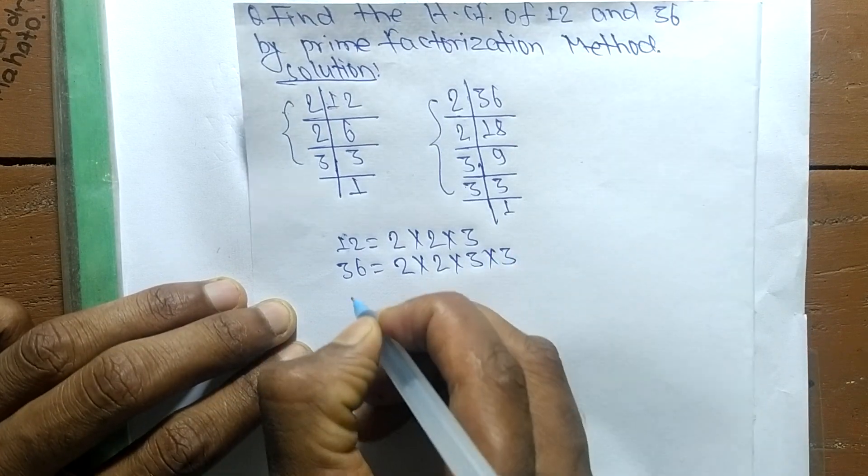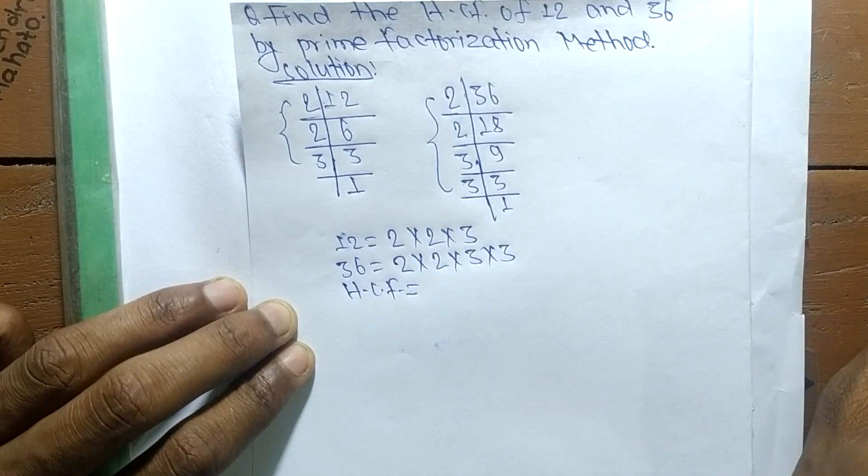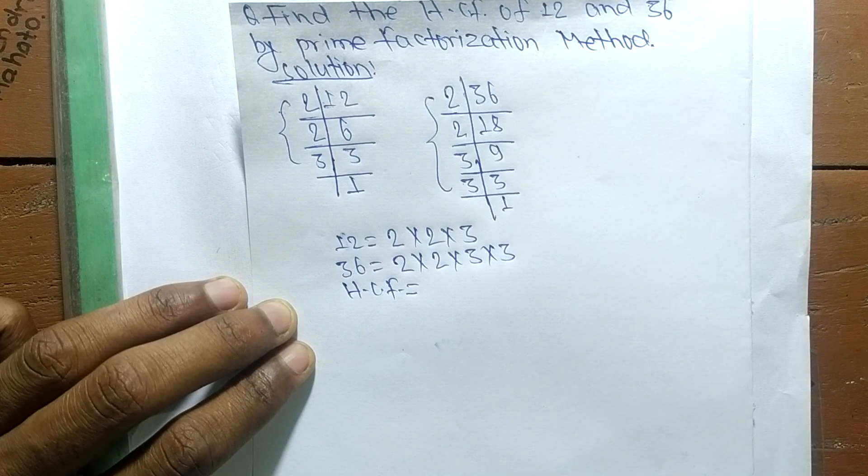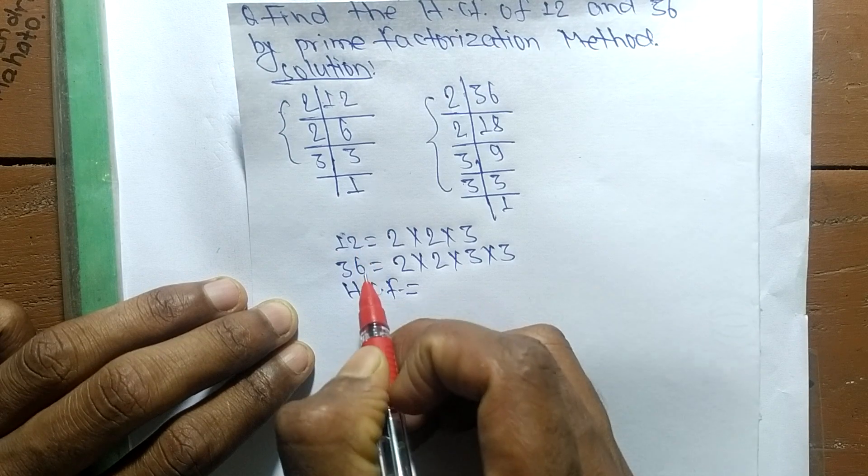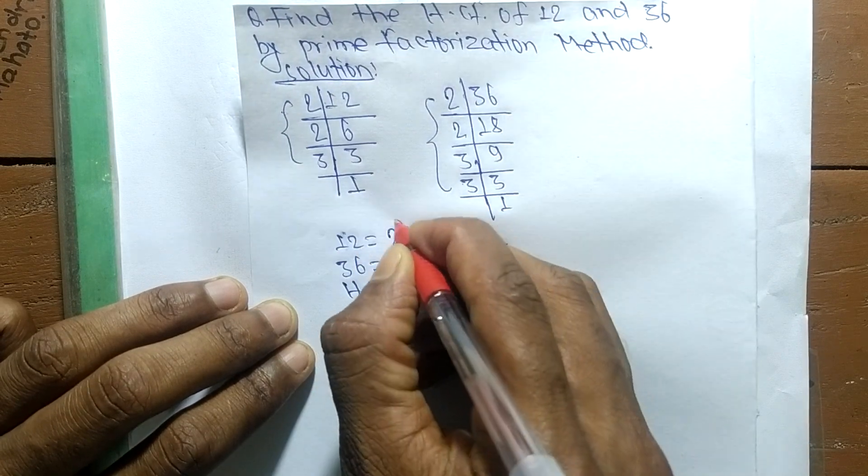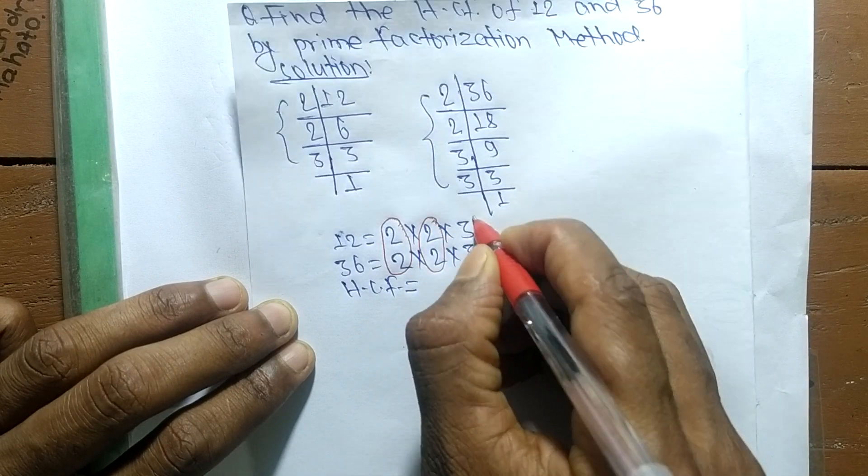The HCF is equal to—now we have to find the common factors in the prime factors of 12 and 36. So the first common factor here is 2, second one is also 2, and third one is 3.